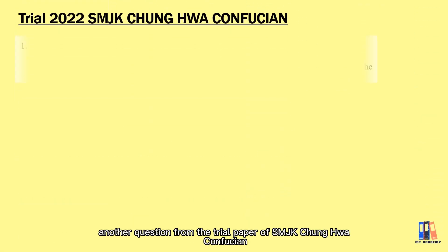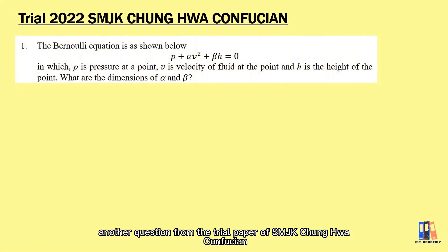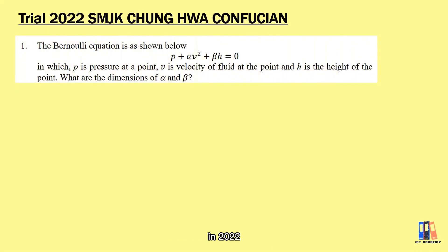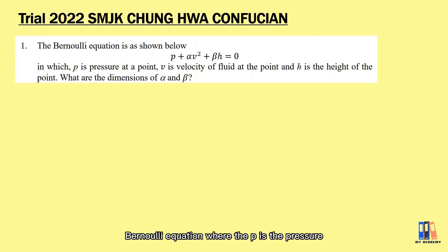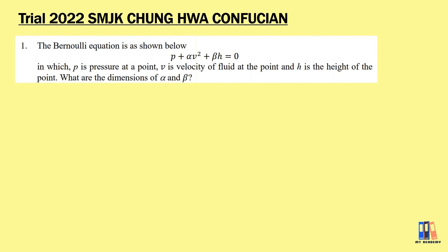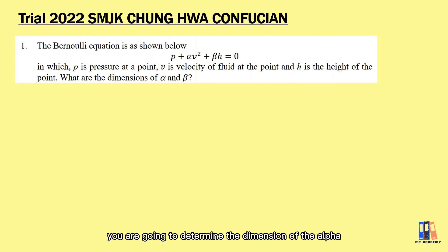Next, we are going to look at another question from the trial paper of S.M.J.K. Chonghua Confucian in 2022. We are given the Bernoulli equation where p is the pressure, v is the velocity, and h is the height of the point. With the knowledge that we have, we are going to determine the dimension of alpha and beta in the equation.